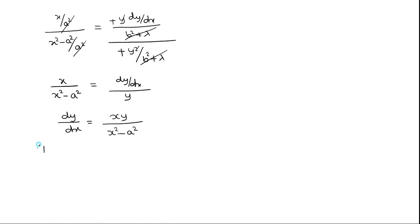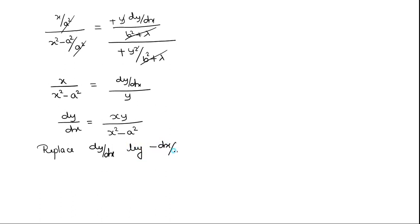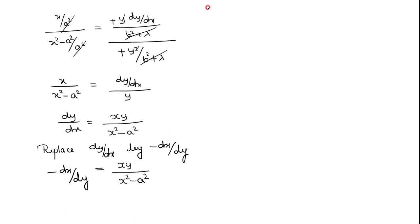So we will go for the replacement. Now replace dy/dx by minus dx/dy. So we get: −dx/dy = xy/(x² − a²). This is the differential equation corresponding to the orthogonal trajectory of the given family.